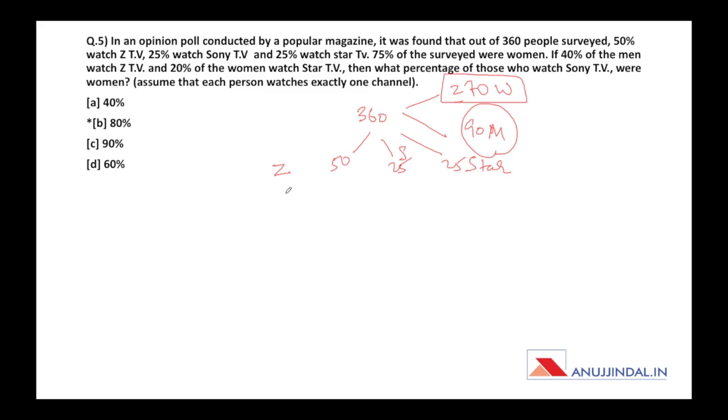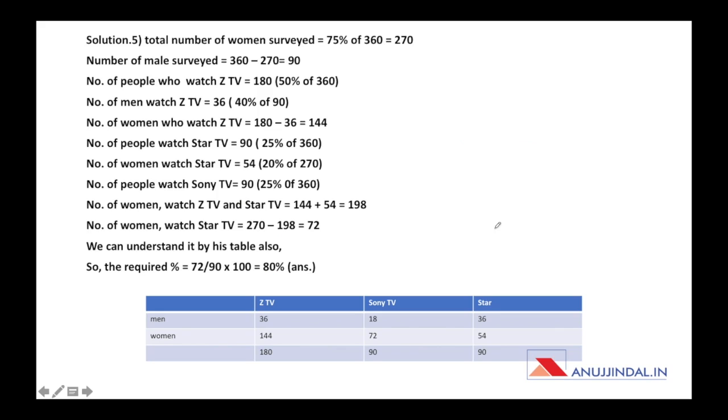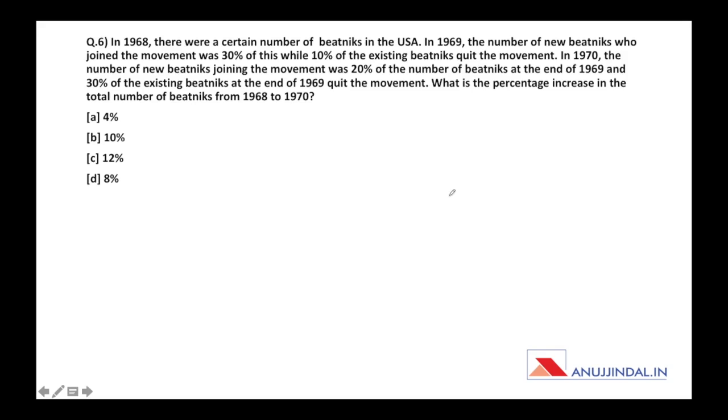40% of the men watch Z TV. 40% of 90 - let's see how easy this calculation is. 10% is 9, we just remove one zero. So 10% is 9, 40% is 9 into 4 which is 36. So 36 men are watching Z TV. Total 50% people watch Z TV, which is 50% of 360 equals 180. So 180 minus 36 equals 144 women. Similarly we can calculate for all channels. Looking at the chart, Z TV has 144 women and 180 total. Same way we can calculate Sony and Star. After these calculations we can easily find the percentage.